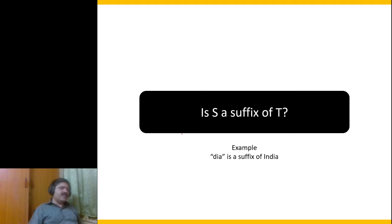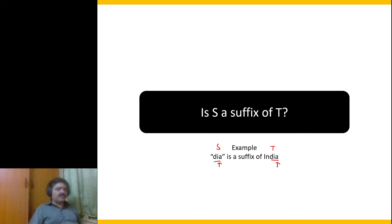Here is another question: is s a suffix of t? For example, 'dia' is a suffix of 'India'. Usually students suggest starting with a pointer at the end of t and another pointer at the end of s, and checking whether they match. If they match, decrement both pointers and check the next characters, continuing until the entire s is confirmed as a suffix of t. Is there a better way?